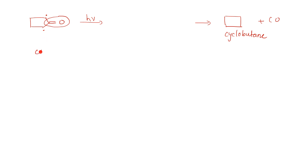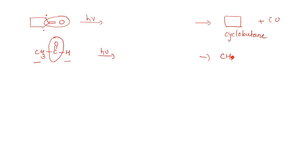Now let's take an example of an aldehyde. Suppose you have an aldehyde with this H. Same steps apply. What we remove is the C=O group. What is left are the two radicals, and they combine to give CH4 - methane. That's how you get your product for an aldehyde.